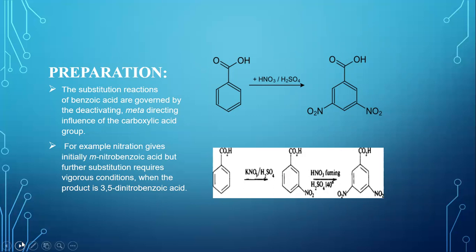Metadirecting groups basically deactivate benzene ring and gives product on meta position, decreasing the electronic charge density on ortho and para position. It is also an example of nitration process.